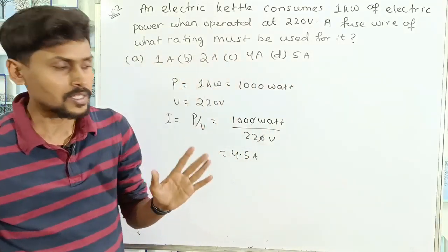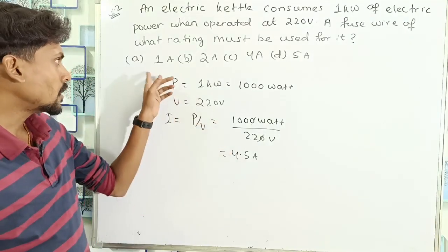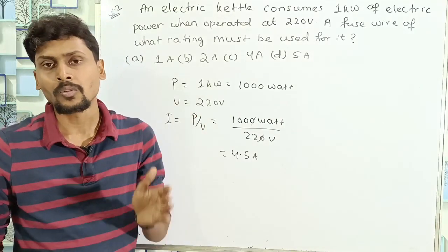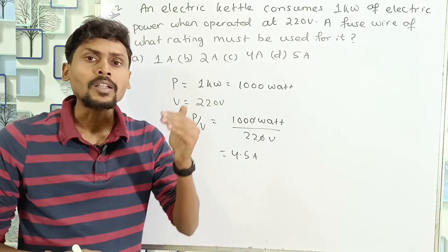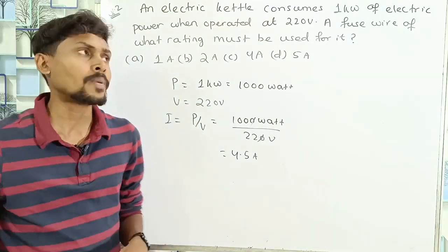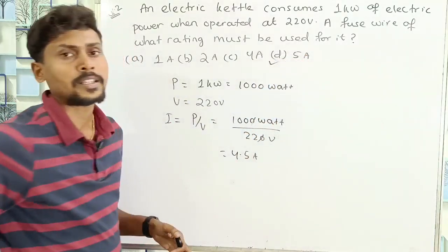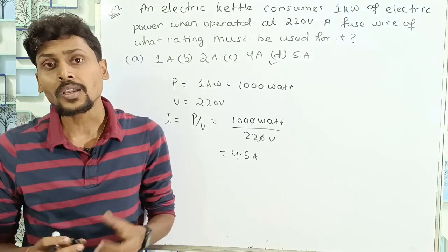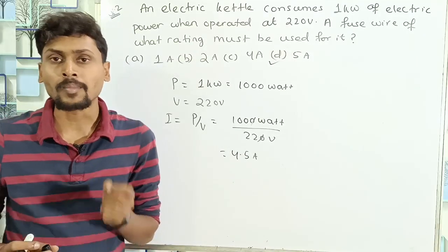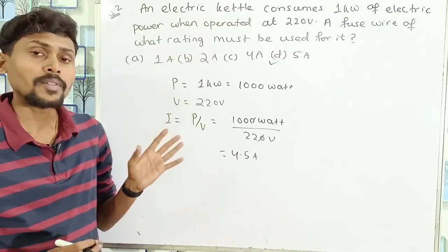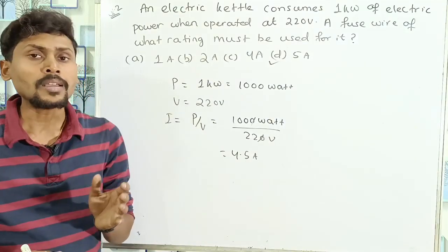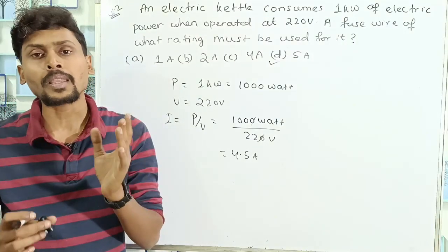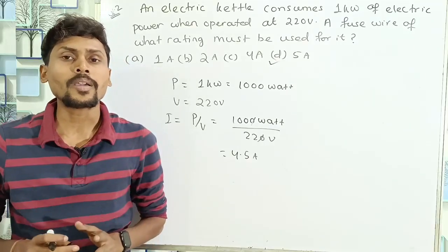The fuse wire rating must be slightly greater than the maximum current that flows through the device. The first three options — 1 A, 2 A, and 4 A — are all less than 4.5 Ampere, so they would blow. Therefore, 5 Ampere is the correct answer for the fuse rating.